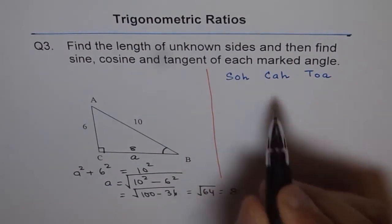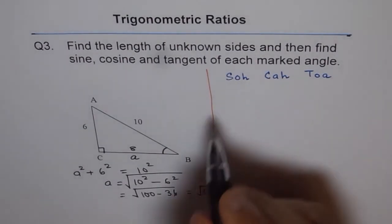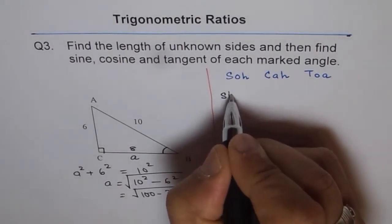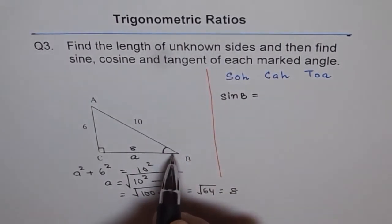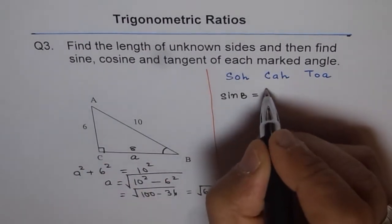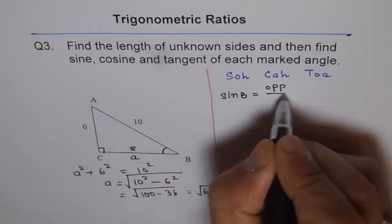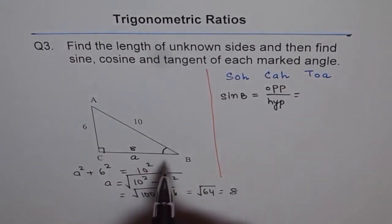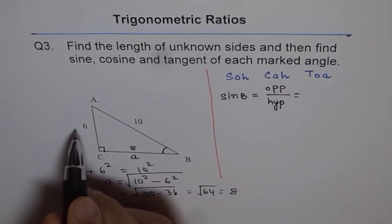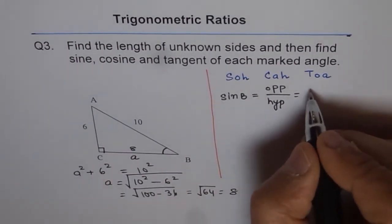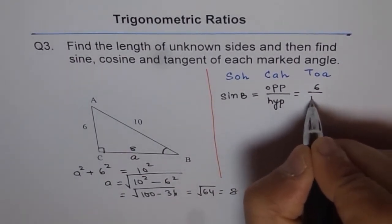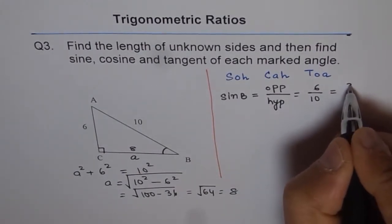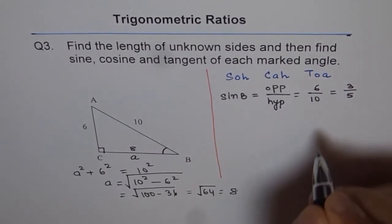Sine of given angle B equals opposite over hypotenuse. I am repeating these things so that you remember them. The opposite side to B is 6, and the hypotenuse is 10. So 6 over 10. That is the value of sine B, which can be reduced to 3 over 5.